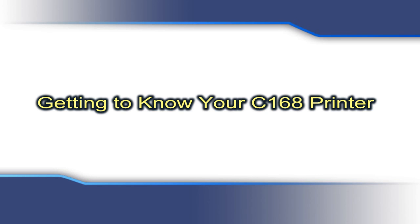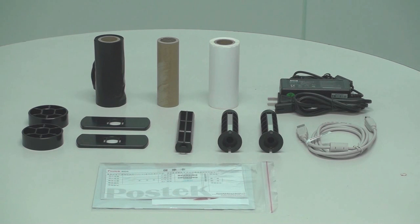First, we'll look at all the components packaged with the C168 printer. Each printer includes a user's manual and a printer driver CD, a sample roll of ribbon, a ribbon core, and a sample roll of labels.